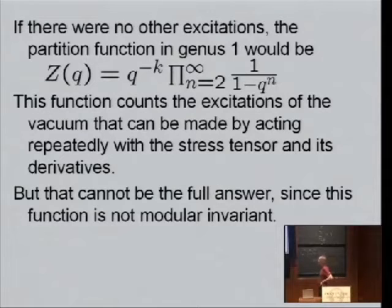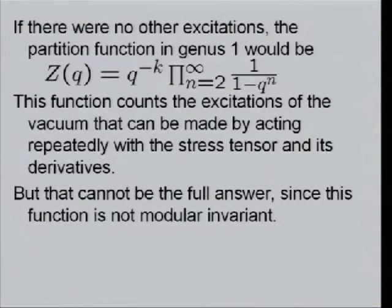So what I've written is the partition function that counts all the states we know about that are close to the vacuum, and that were essentially, whose existence follows from the construction of Brown and Henneaux.